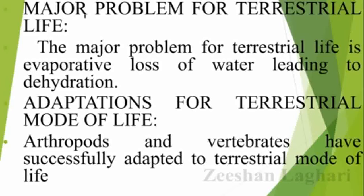The major problem for terrestrial life is evaporative loss of water, leading to dehydration. The big problem for organisms living on land is evaporative water loss, which can cause dehydration — that is, loss and removal of water from their body. In a dry environment, water can evaporate from their body through evaporative loss.